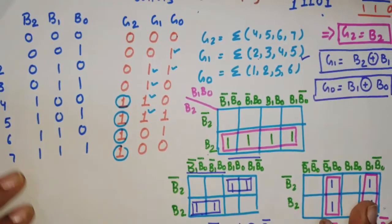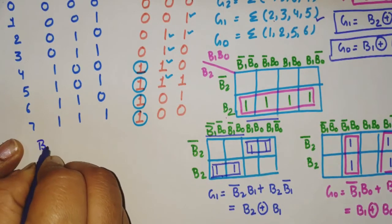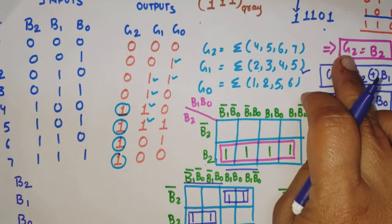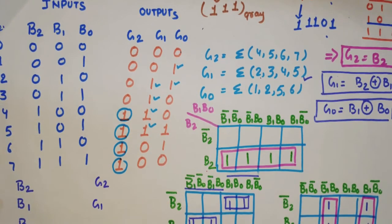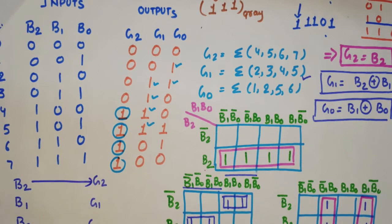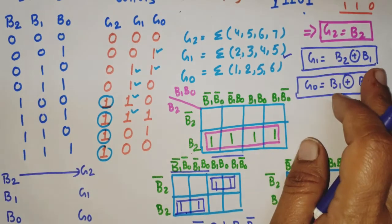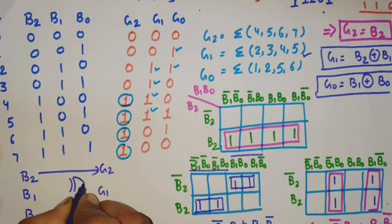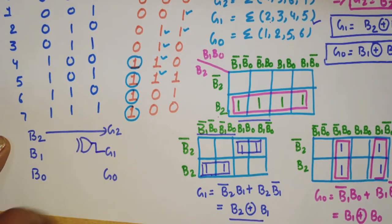Now for the logic circuit diagram. The inputs are B2, B1, B0 and outputs are G2, G1, G0. Since G2 equals B2, B2 is directly connected to G2. For G1 equals B2 XOR B1, we use an XOR gate with inputs B2 and B1, and the output is G1.